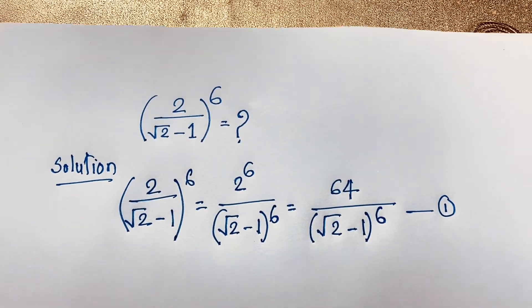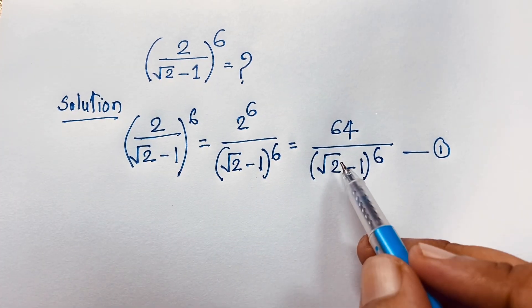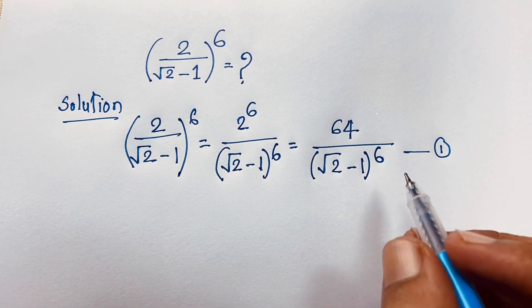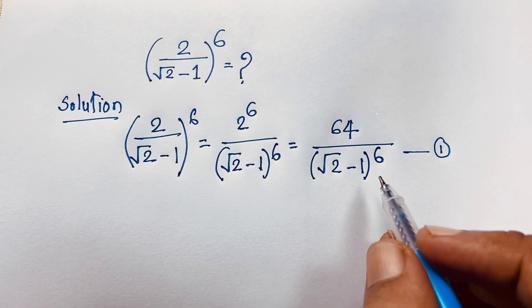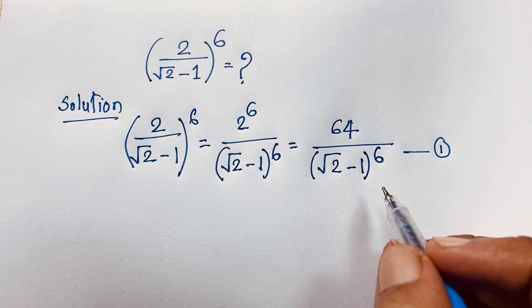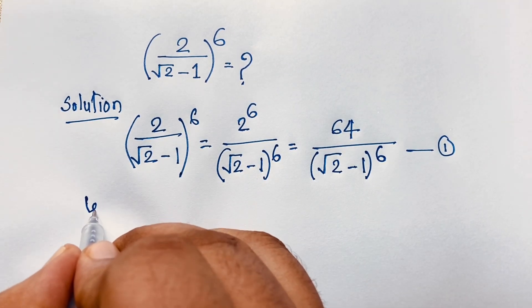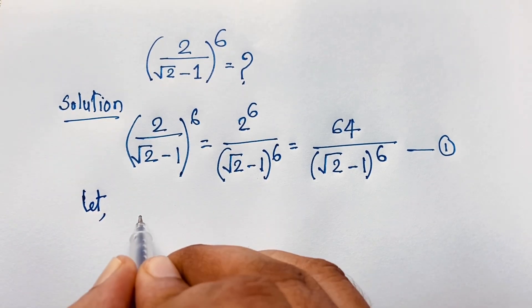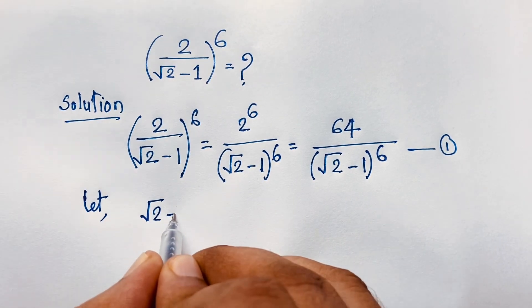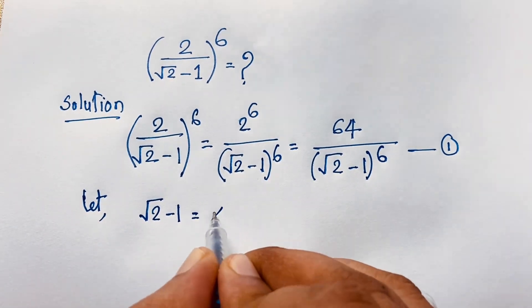Now we have 64 over (√2 minus 1) whole to the power 6. We need to find what (√2 minus 1)^6 equals. So let √2 minus 1 equal x.